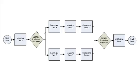In Informatica Developer, you can use an exclusive gateway to make a decision in a workflow. An exclusive gateway splits and merges paths in the workflow based on how the Data Integration Service evaluates expressions in conditional sequence flows.